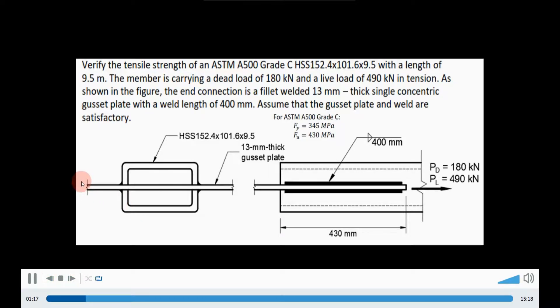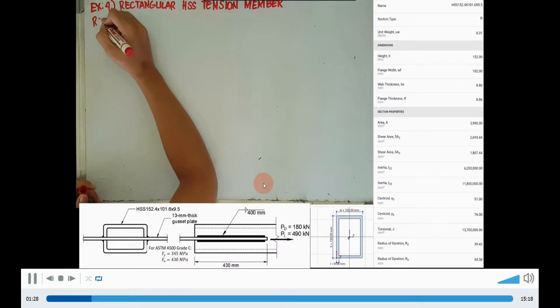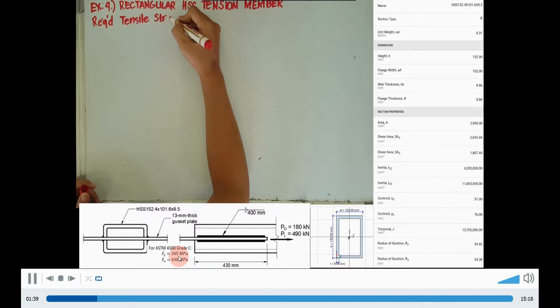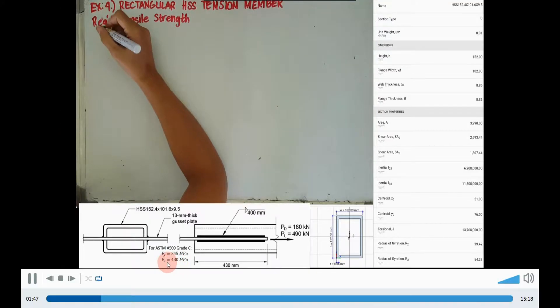This is the 13mm thick gusset plate welded in our section, and the length of connection is 400mm. Take note that under ASTM A500 grade C, our yield stress is 345 MPa and our tensile stress is 430 MPa.